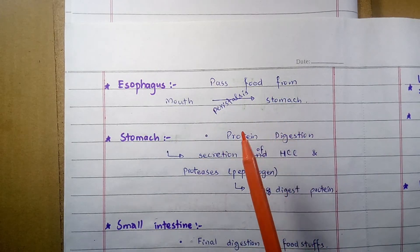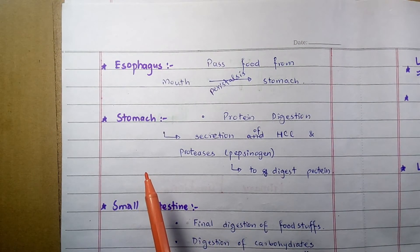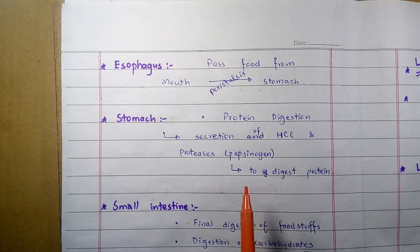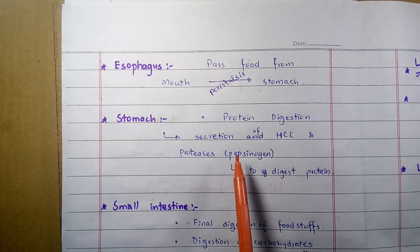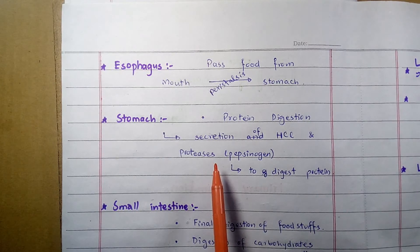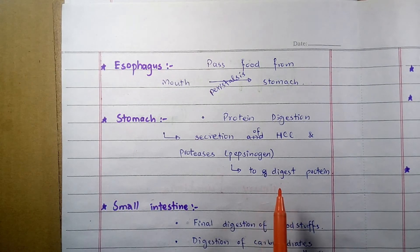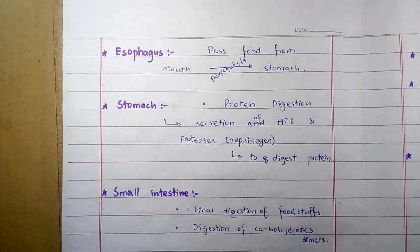The stomach is also an organ of the gastrointestinal tract. It is the main site for protein digestion. It is a J-shaped muscular organ that secretes strong acid HCl and the protease enzyme pepsinogen. Pepsinogen digests mainly the protein content in the food material.